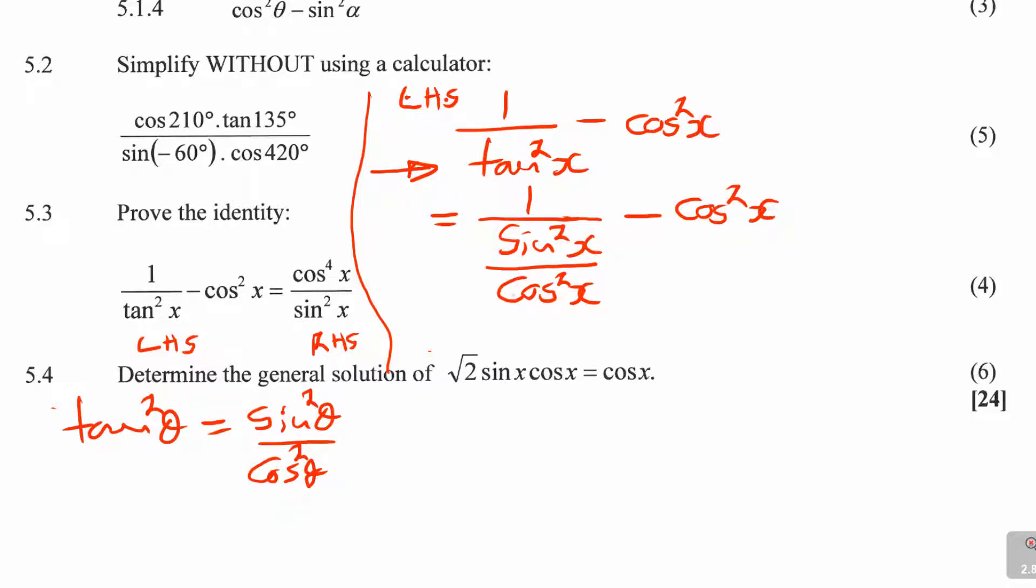Then it's minus cos squared x. First things first. Now, you need to know in maths. Let me take a calculator here. If I say to you 1 divided by 1 over 2, see how I did it? The answer becomes 2. If I say to you 1 over 1 over 4, the answer becomes 4.